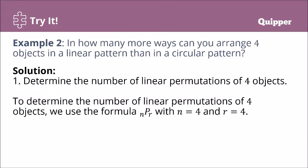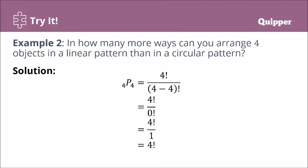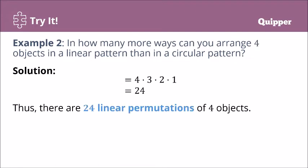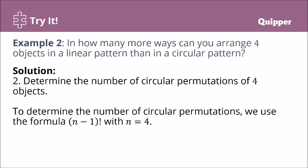Since we are arranging all four objects, r also equals four. So that is 4P4, which is just 4! = 4 × 3 × 2 × 1 = 24. So there are 24 linear permutations of 4 objects.